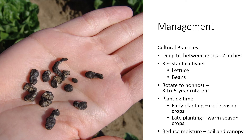We can also alter our planting time to keep a crop out of the field during ideal conditions for Sclerotinia. Cool season crops planted earlier so they're out of the field by the time Sclerotinia becomes active, or warm season crops planted later — avoiding that April/May window — is a consideration that may work for some growers. And of course, reducing soil moisture as much as possible and reducing canopy humidity will help slow the spread and acceleration of disease.